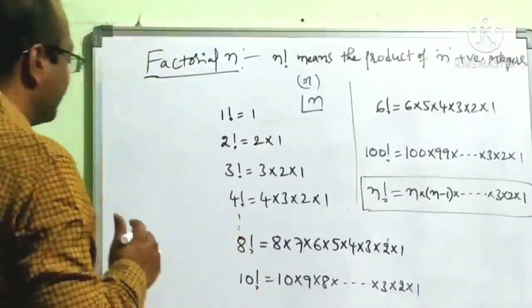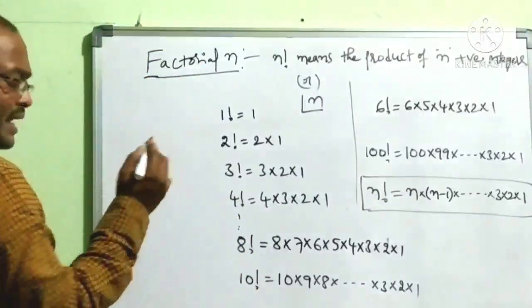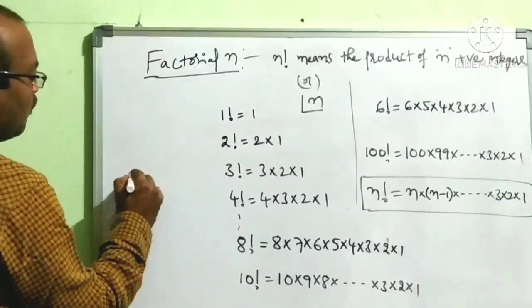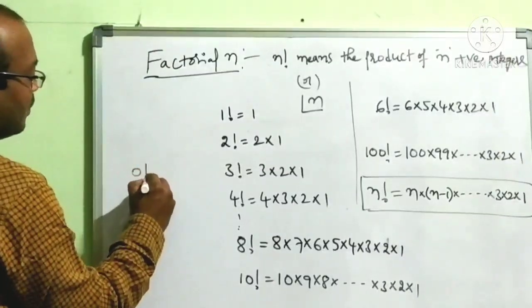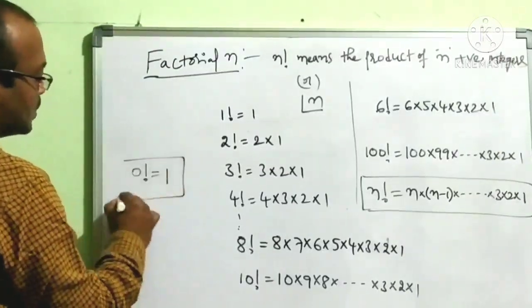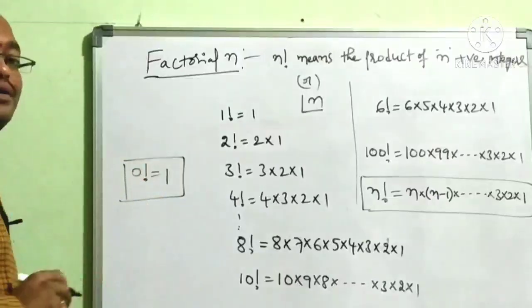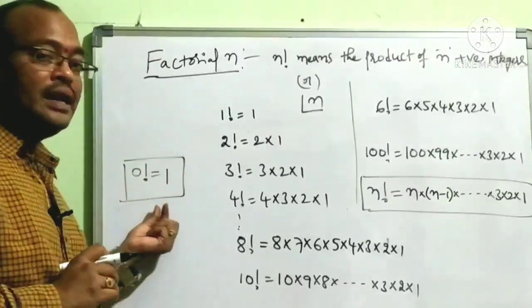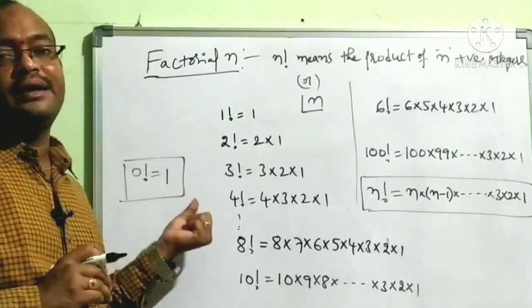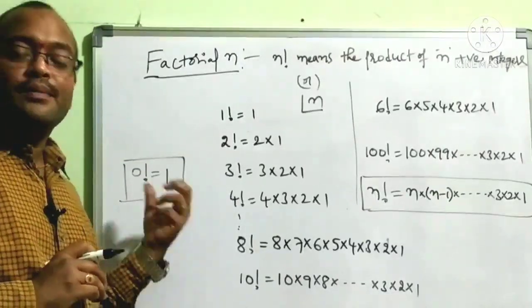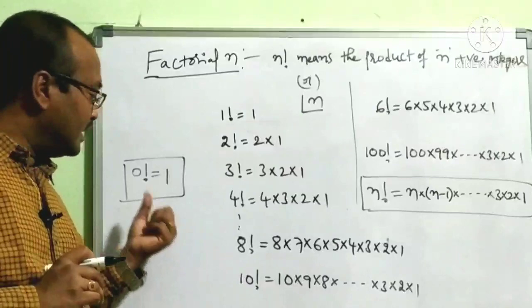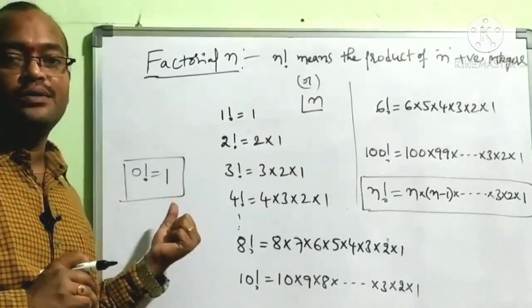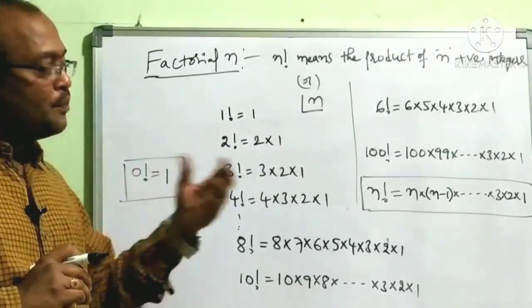By convention, we take 0 factorial equal to 1. We treat zero factorial as equal to 1.